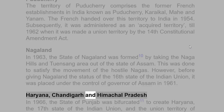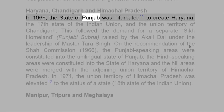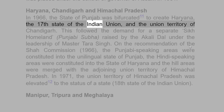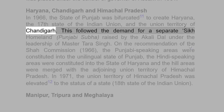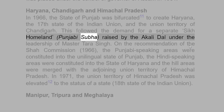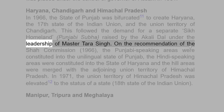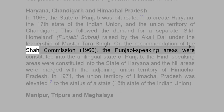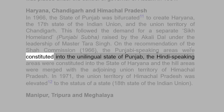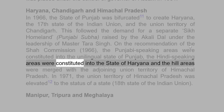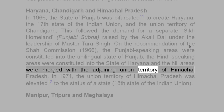In 1966, the state of Punjab was bifurcated to create Haryana, the 17th state of the Indian Union, and the Union Territory of Chandigarh. This followed the demand for a separate Sikh homeland, Punjabi Suba, raised by the Akali Dal under the leadership of Master Tara Singh. On the recommendation of the Shah Commission, 1966, the Punjabi-speaking areas were constituted into the unilingual state of Punjab, the Hindi-speaking areas were constituted into the state of Haryana, and the hill areas were merged with the adjoining Union Territory of Himachal Pradesh.